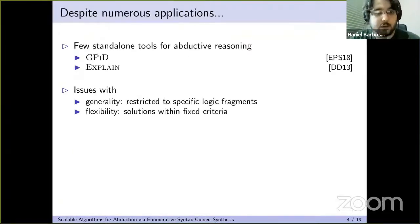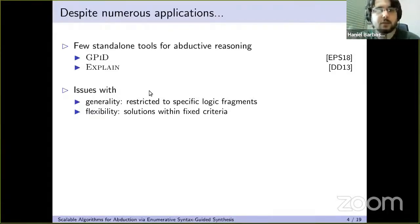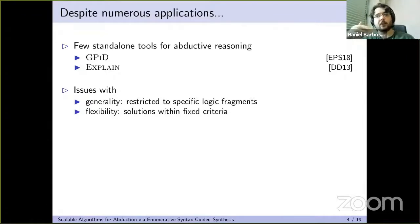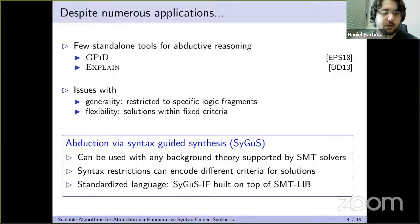Despite all these interesting applications, there has not been a general, flexible, standalone tool that performs abductive reasoning that you can use as a black box and plug into a more general engine. There have been some attempts, such as the GPID tool and X-Plane in the past decade, but they suffer from being restricted to logic fragments, or they are not as flexible in the criteria used to find solutions, since there are many different solutions in abduction problems generally.